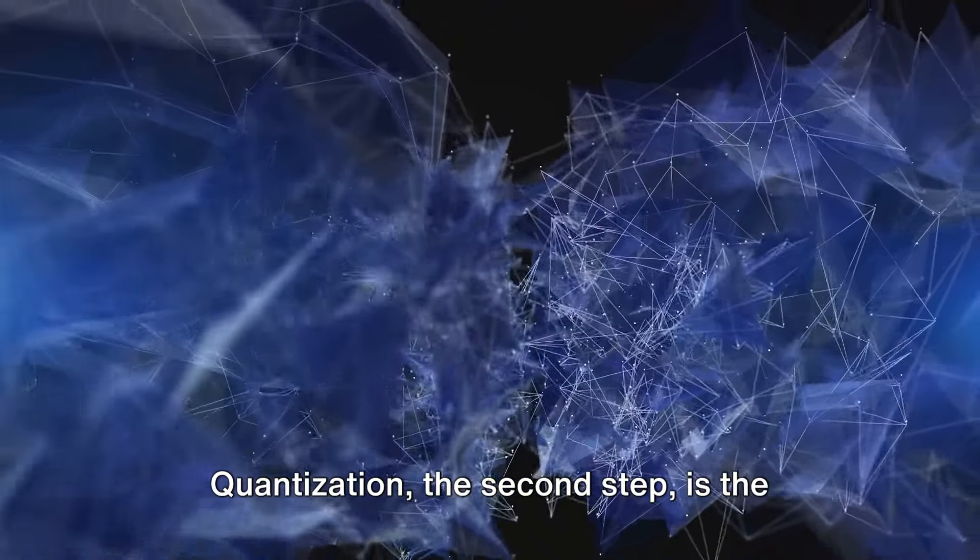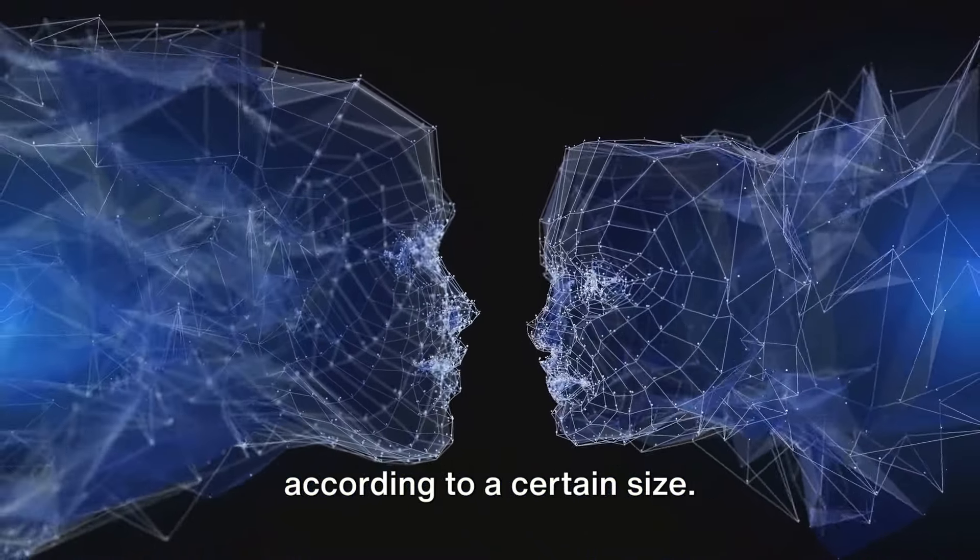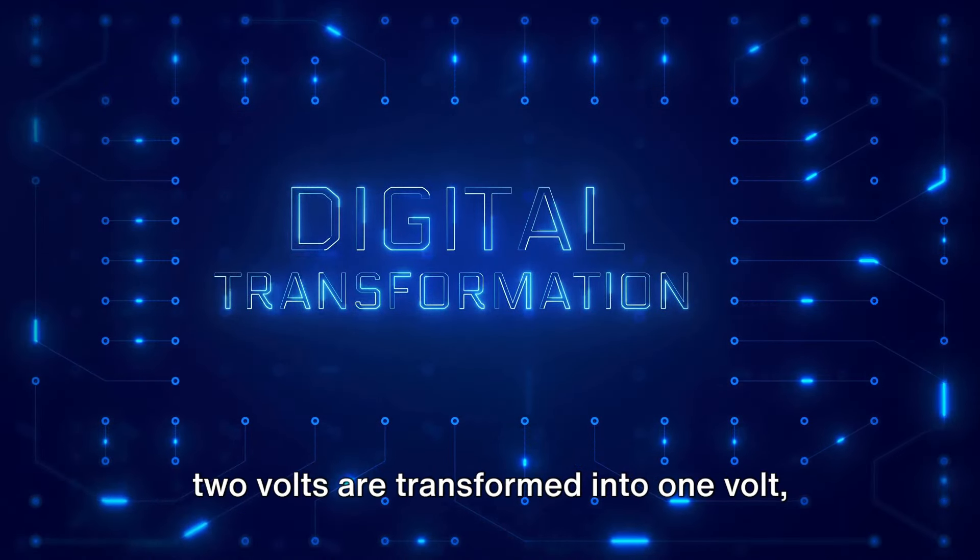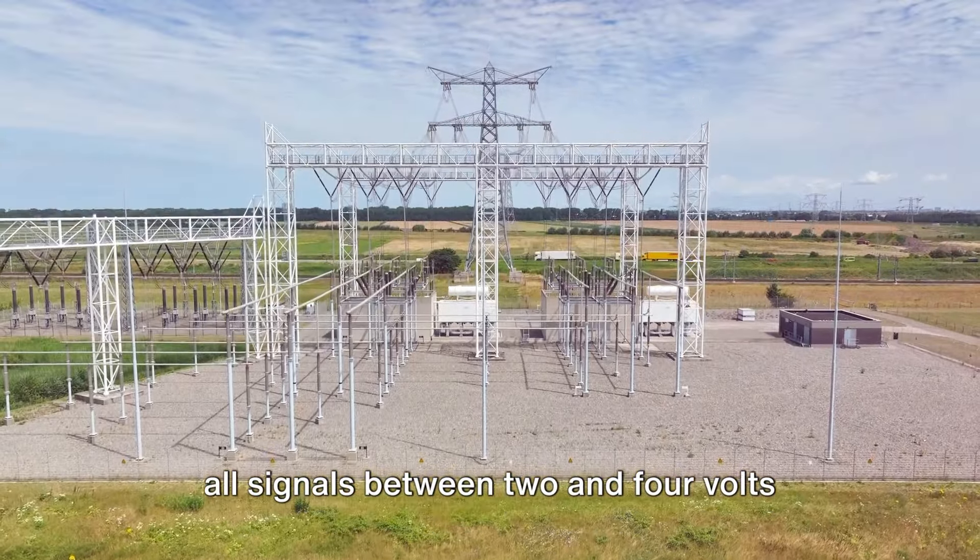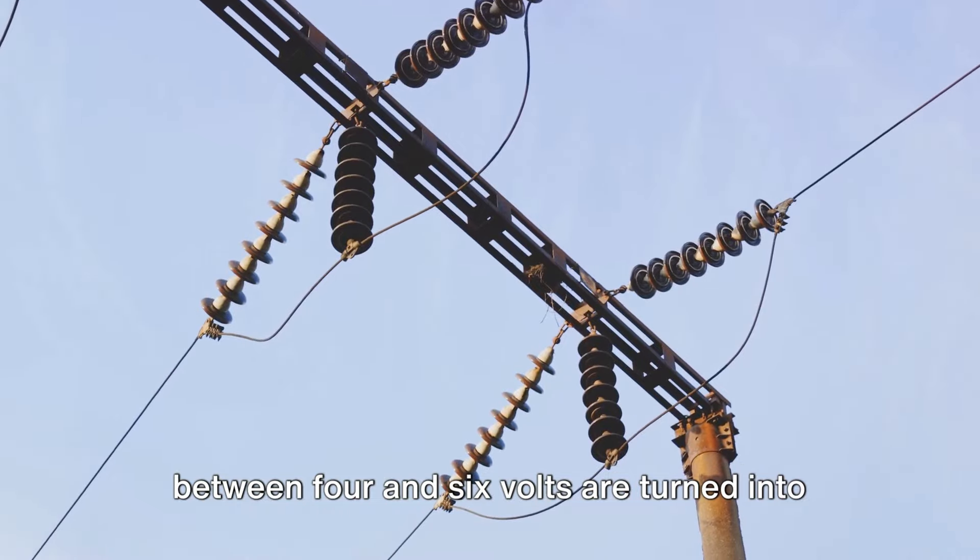Quantization, the second step, is the classification and segmentation of signals according to a certain size. For example, all signals between 0 and 2 volts are transformed into 1 volt, all signals between 2 and 4 volts become 3 volts, and all signals between 4 and 6 volts are turned into 5 volts.